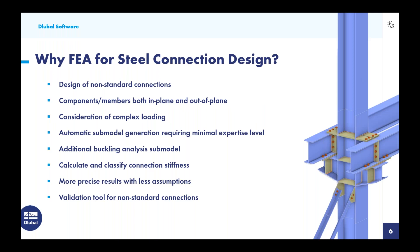Our Steel Joints add-on is unique in that for every single connection, we generate an FEA model underneath the hood. The benefit of FEA for steel connection design compared to standard analytical calculations is that we can now design non-standard connections — no longer limited to standard beams or columns with one or two braces, but any connection created with these various components can be fully designed according to the AISC. This includes components and members both in-plane and out-of-plane, so we're not restricted to design in a single plane.